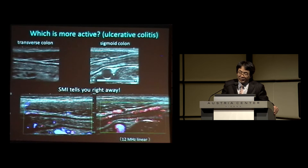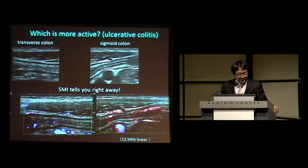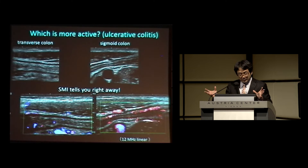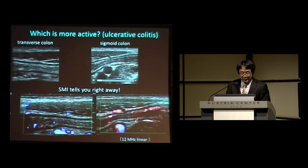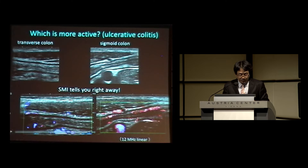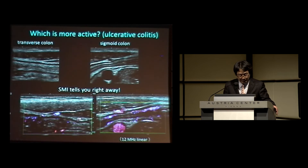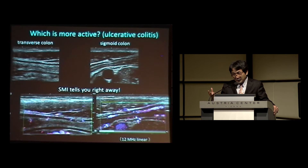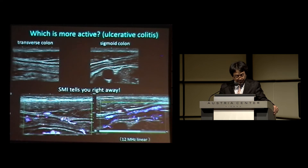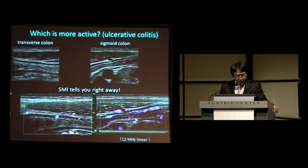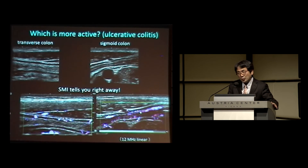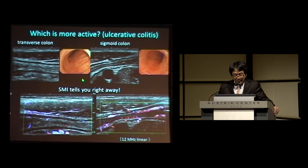Using SMI for the gastrointestinal tract is another good option. These pictures are from a patient with ulcerative colitis. On grayscale, you can't be sure which bowel segment is more active, because the wall thickness is about the same. But using SMI, it is obvious the sigmoid colon is more hyperemic than the transverse colon. You can even detect increased blood flow in the mucosal layer — this anterior wall, posterior wall, and the black belt representing the mucosal layer. This was confirmed by endoscopy.